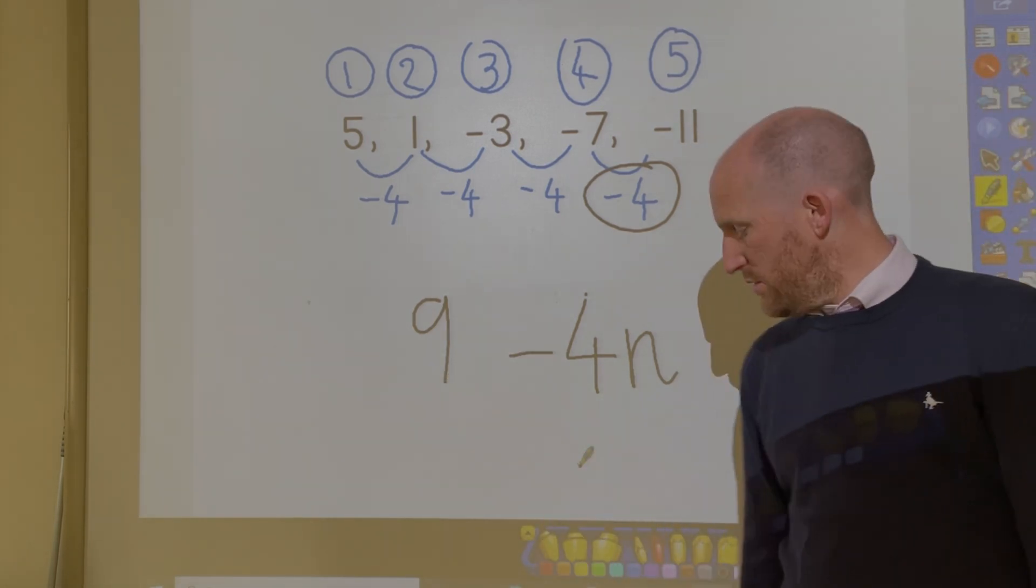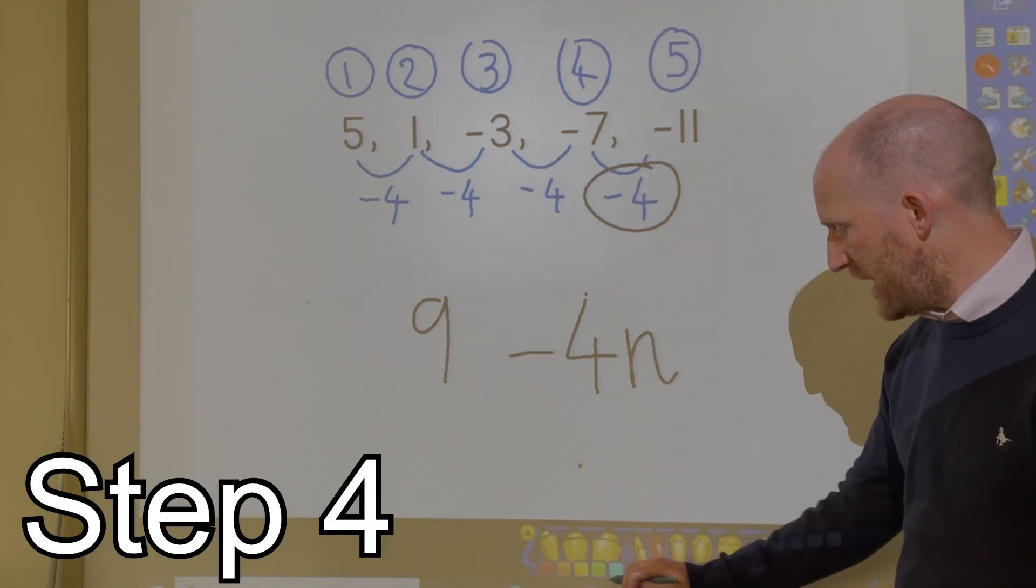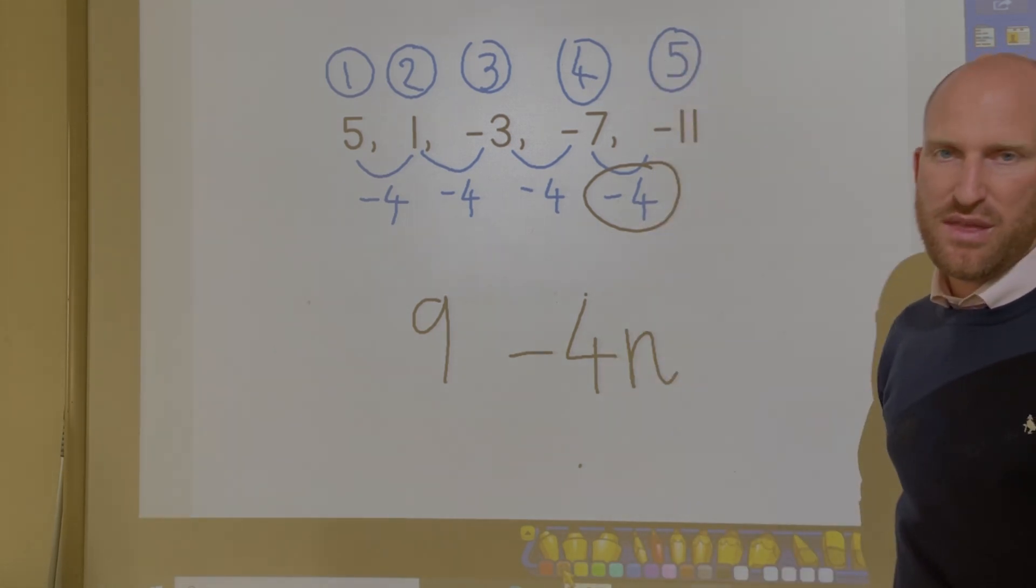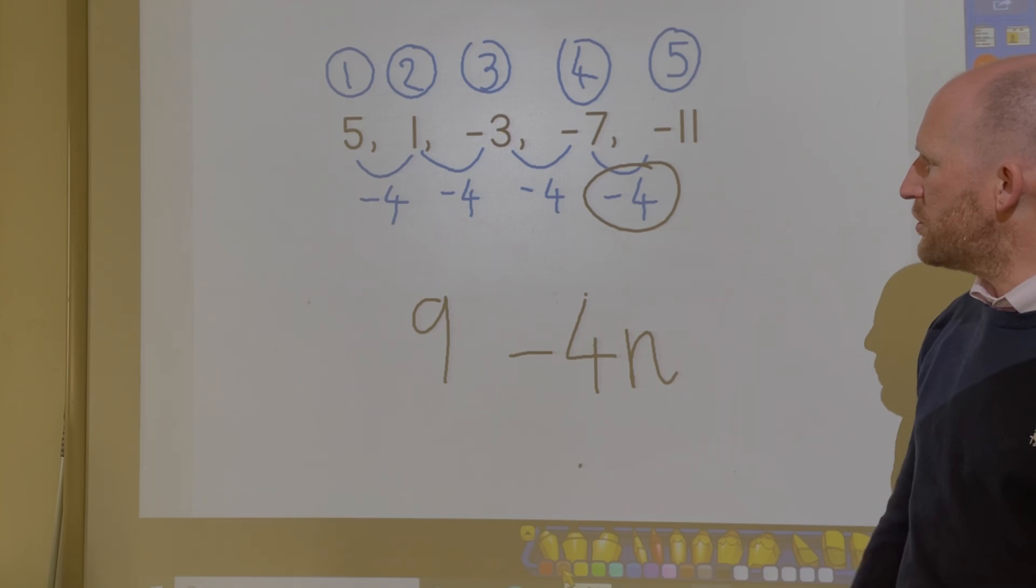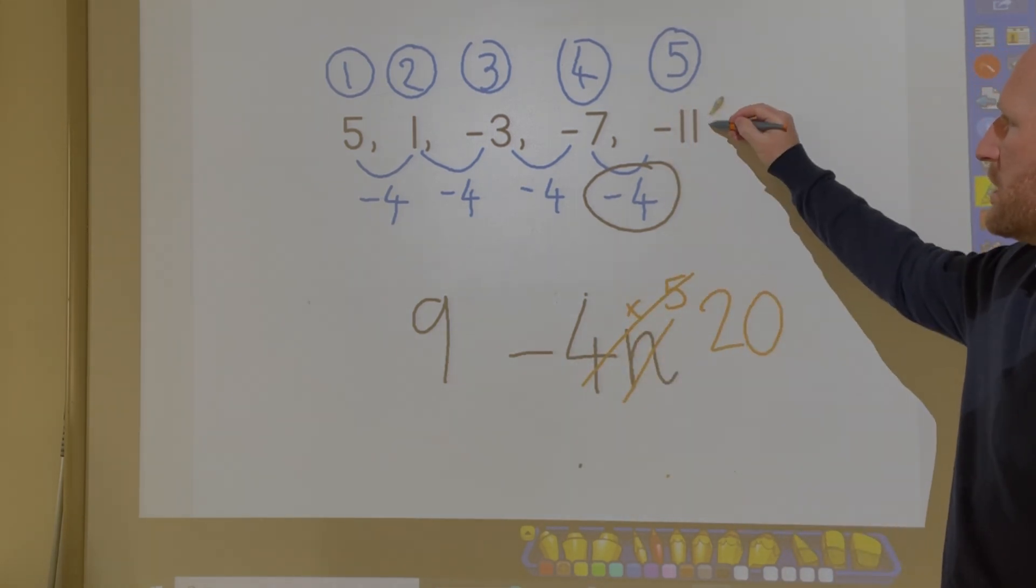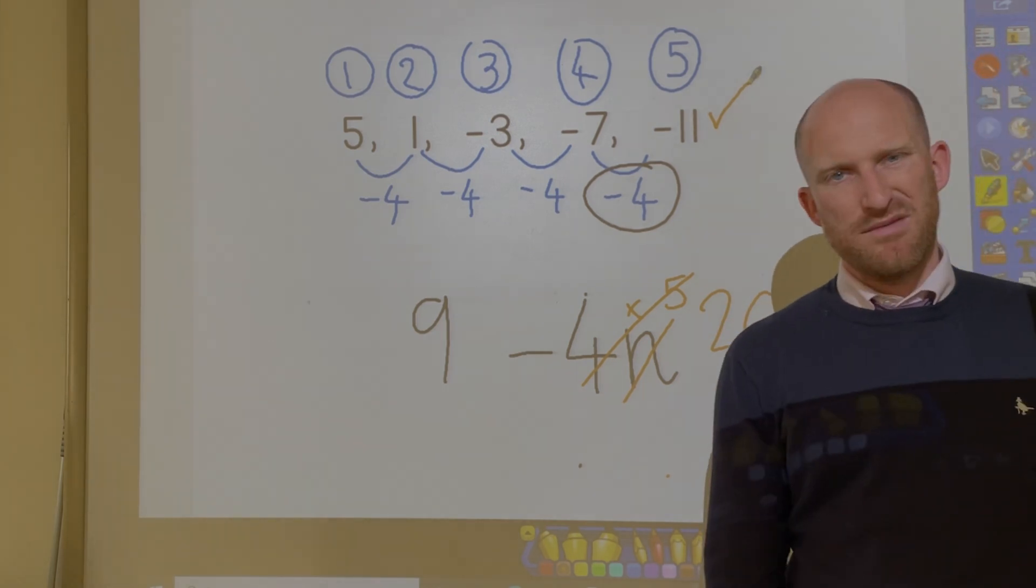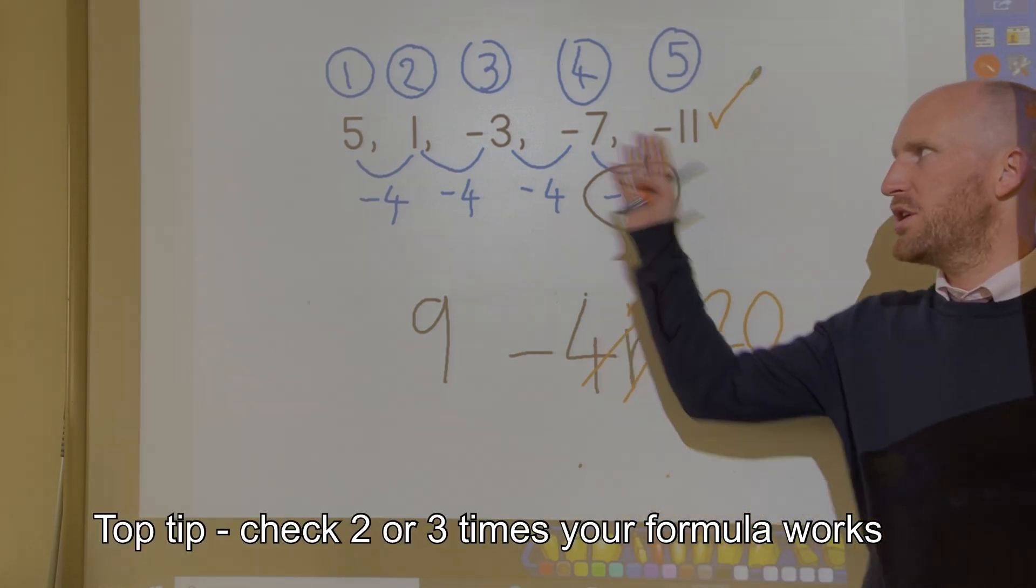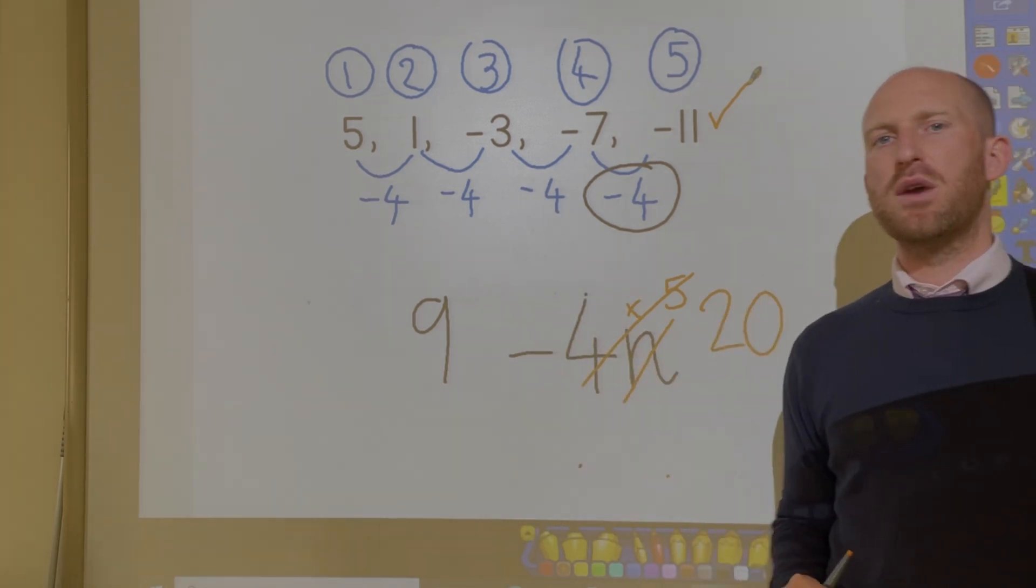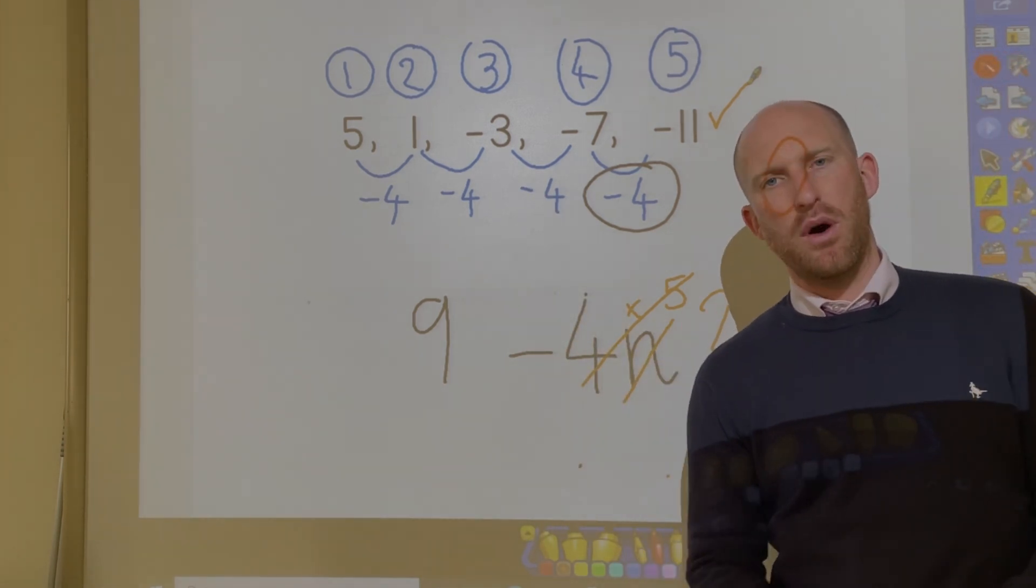And then all I have to do is do the final step, which is test this out. So I'm going to try and test out the fifth term here. 9 take away 20 makes negative 11. Now a good mathematician should always check their formula two or three times. In this video, I'm only going to check it once, but you should be checking it two or three times.